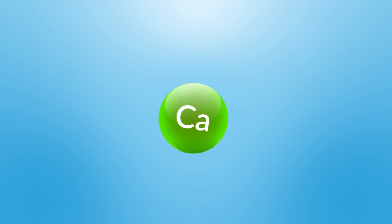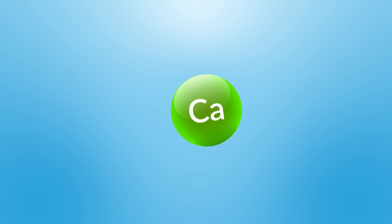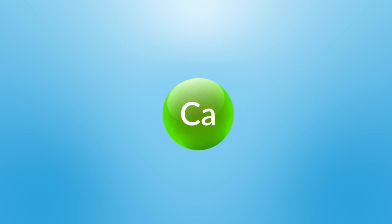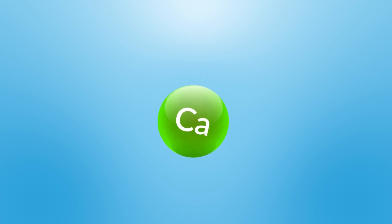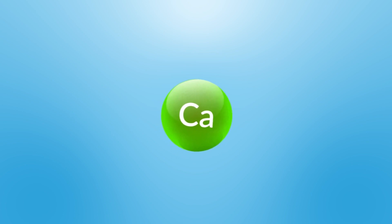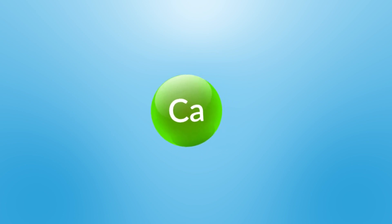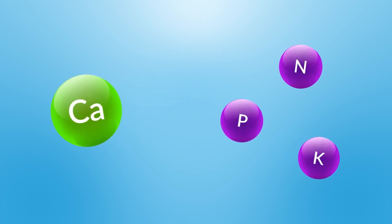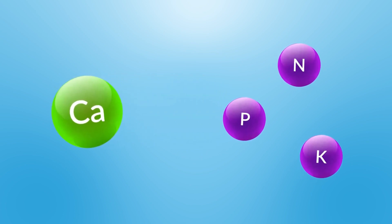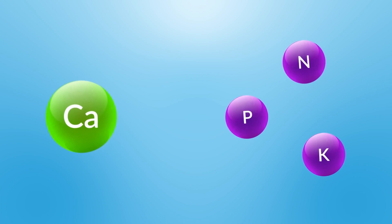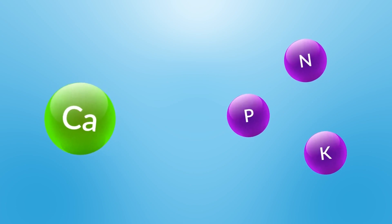Calcium is one of the most essential elements in plant nutrition. In fact, you might be overlooking its role in your crop growth in favor of balancing nitrogen, phosphorus, and potassium. We've recently learned that calcium may be even more important than the standard NPK, as it serves many different roles in the plant.